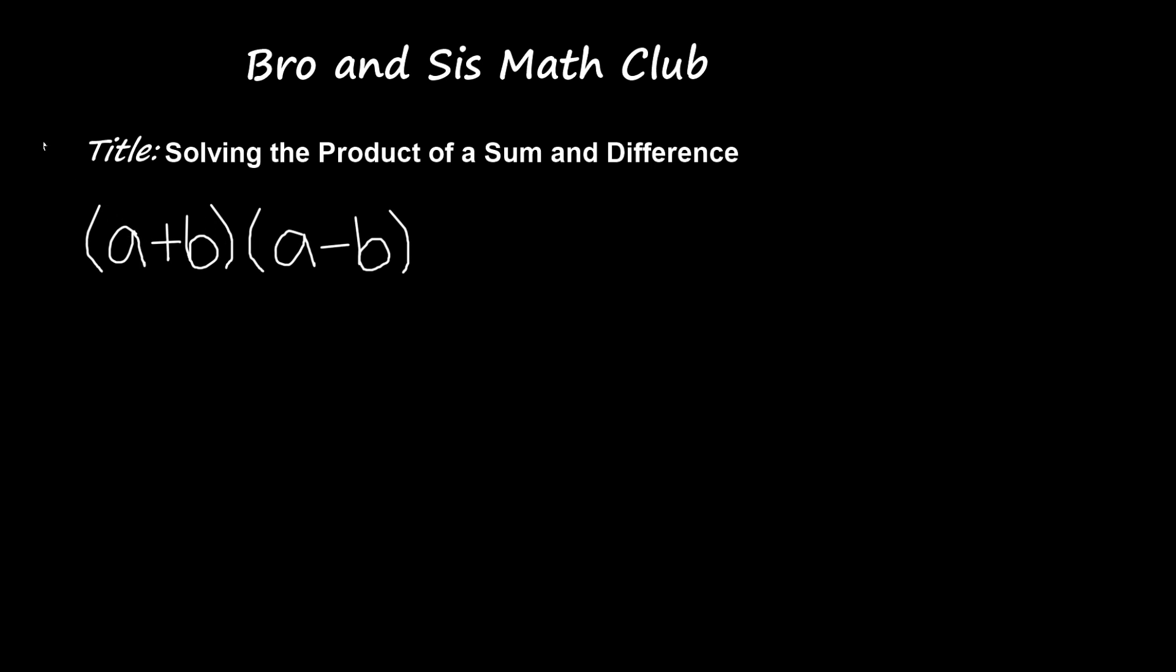So when we solve this we're going to use the distribution method. First we're going to distribute a to the other a. So a times a, I'll just write that as a squared, and then we'll distribute a to the negative b which will give us negative ab.